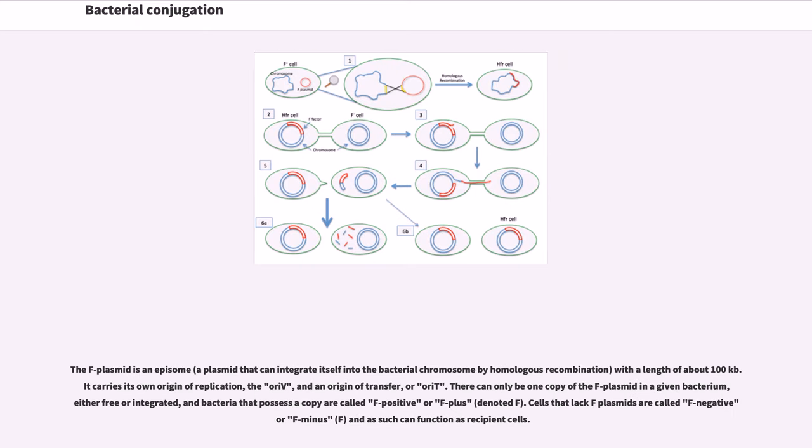The F-plasmid is an episome, a plasmid that can integrate itself into the bacterial chromosome by homologous recombination, with a length of about 100 kilobits. It carries its own origin of replication, the oriV, and an origin of transfer, or oriT.